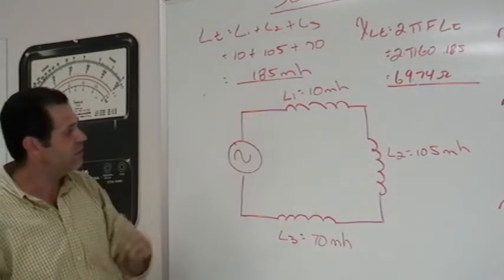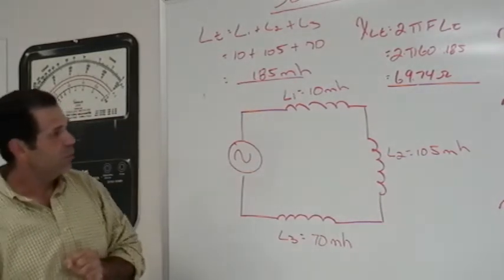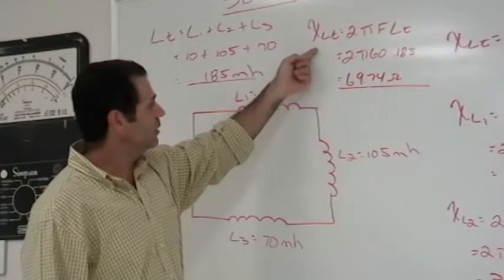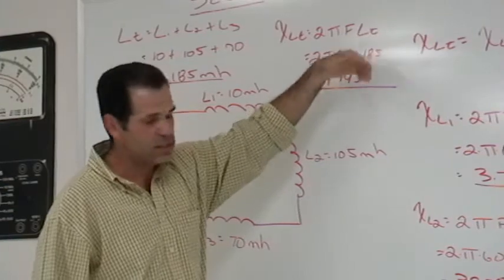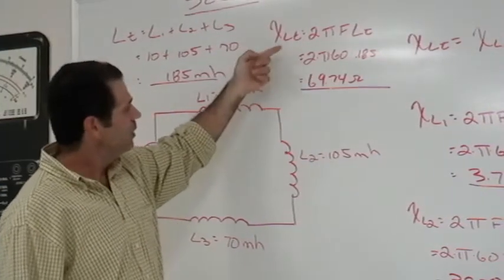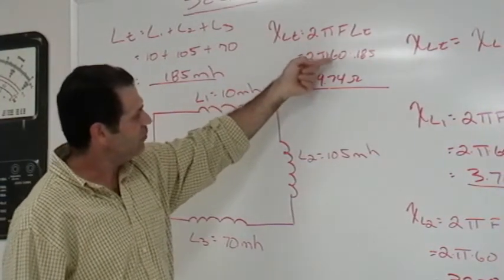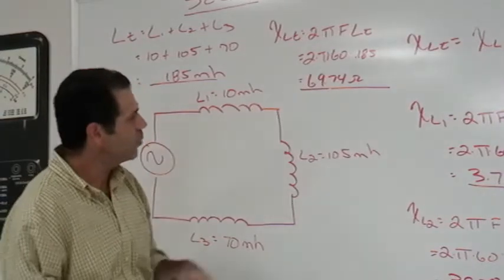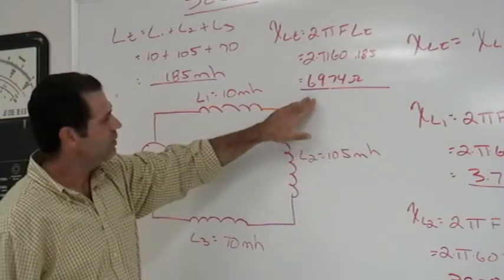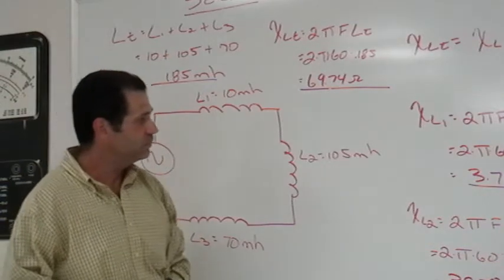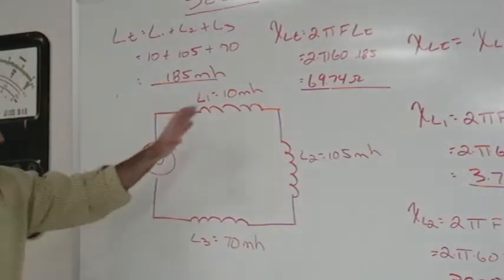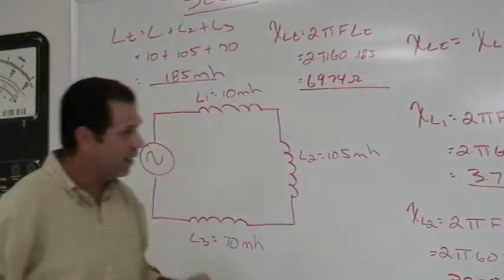In this case we get 185 millihenries. We plug it into our inductive reactance formula 2 pi FL and I got the sub T to indicate total. So 2 times pi times the frequency of 60 hertz times 0.185, we get a value of 69.74 ohms. That is the total inductive reactance of this circuit.